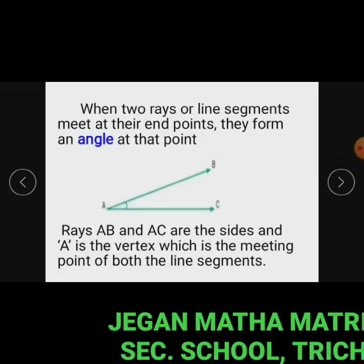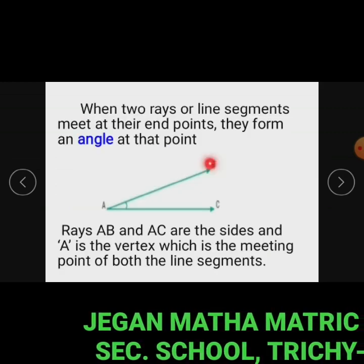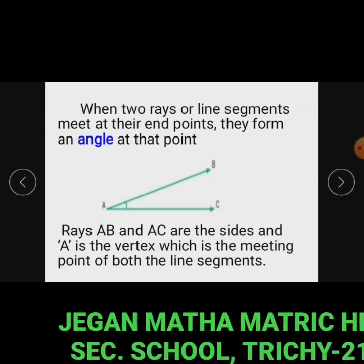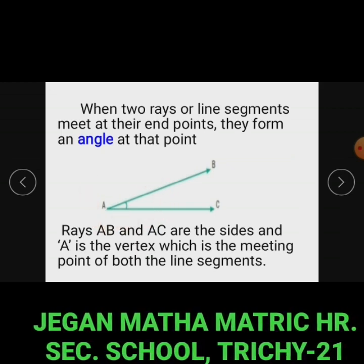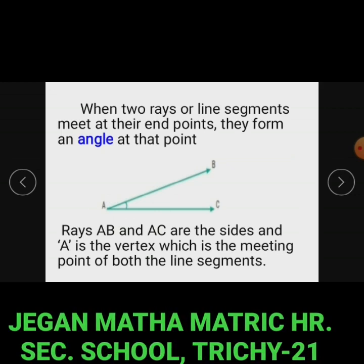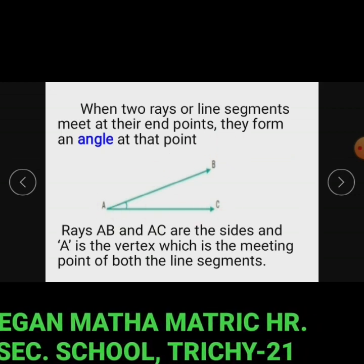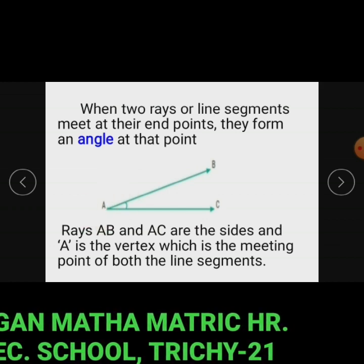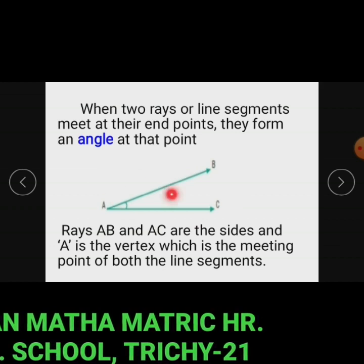When two rays or line segments meet at their end points, they form an angle at that point. In this figure, the rays AB and AC are the sides and A is the vertex, which is the meeting point of both line segments.